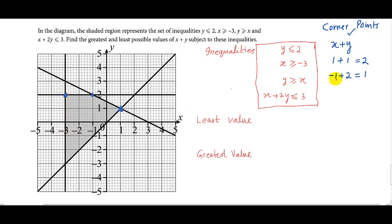x is minus 3 and y is 2, so the answer is minus 1. And this is the fourth corner point. Here the coordinates are minus 3 and minus 3, so x is minus 3 and y is also minus 3, so here it is minus 6. These are the four corner points.